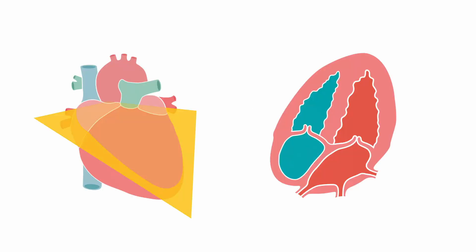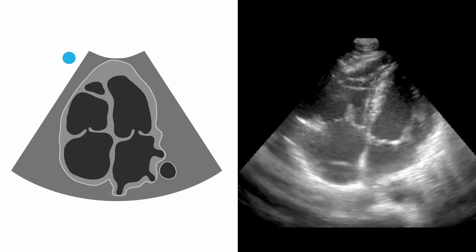Your image should have an orientation like this: the right and left ventricle on the top, the mitral valve, your left atrium, your right atrium, and your tricuspid valve. Here's your ultrasound image — again, right ventricle and your left ventricle, your mitral valve, your left atria, your right atria, and your tricuspid valve.